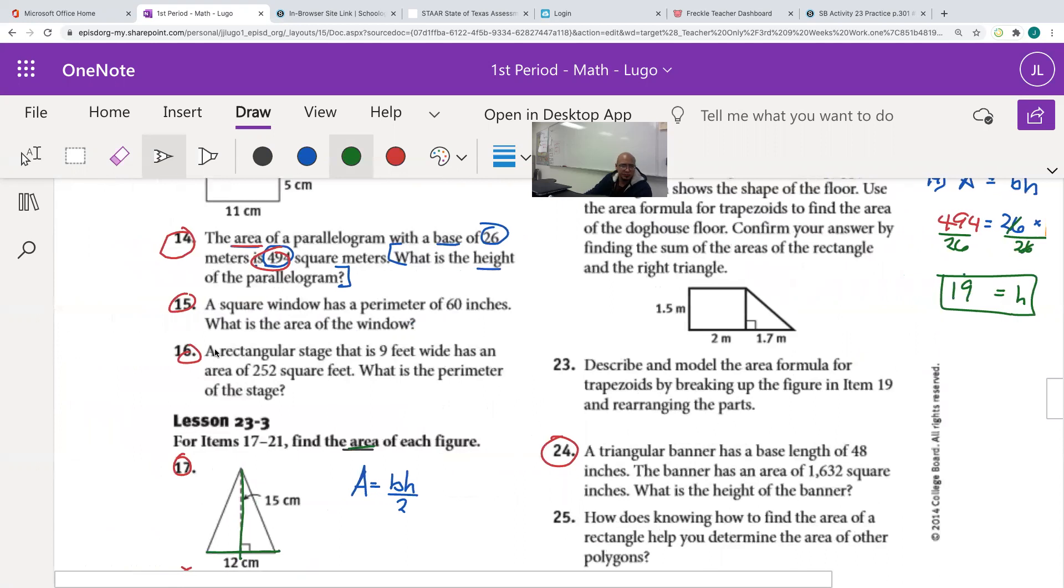Let us do number 15. So number 15, we have a square window. Perimeter of 60. Square window with a perimeter of 60. So we have a window here. It's a square. We know that in the square, all the sides are exactly the same. And it says that the perimeter is 60. That means that when I add all four sides, this side plus this side plus this side plus this side, that is going to give me 60. Now it's asking, well, what is the area of this window? What is the area?